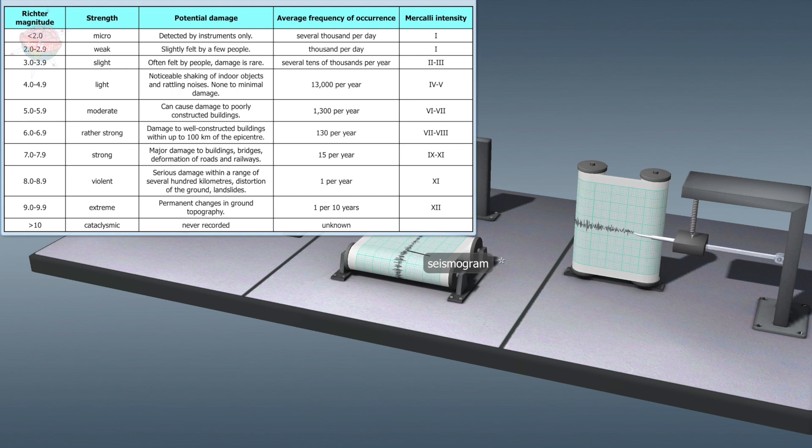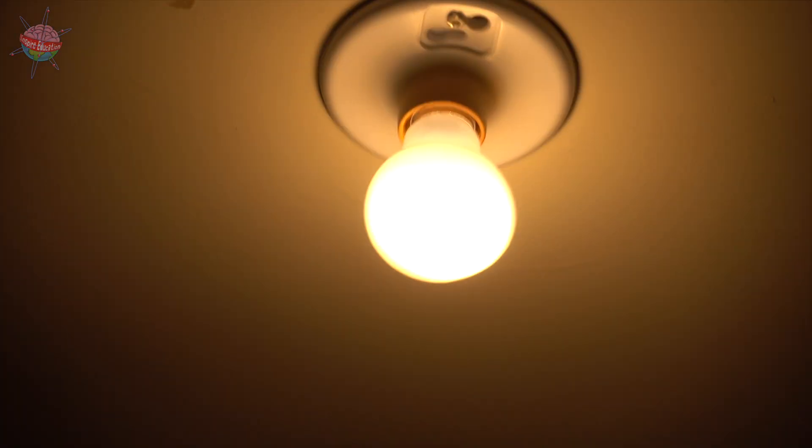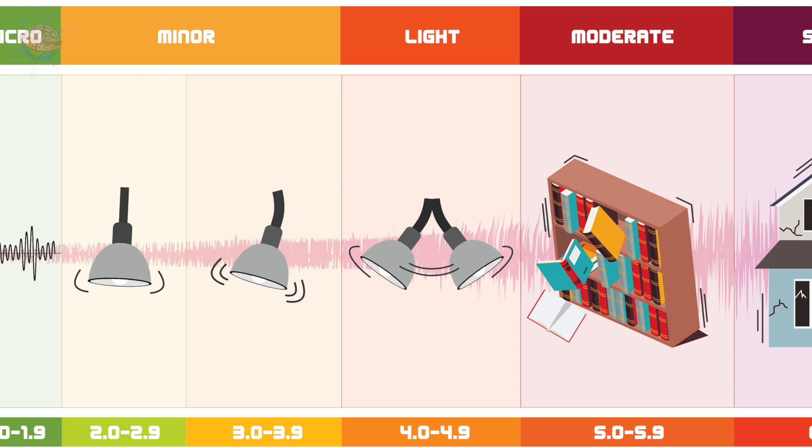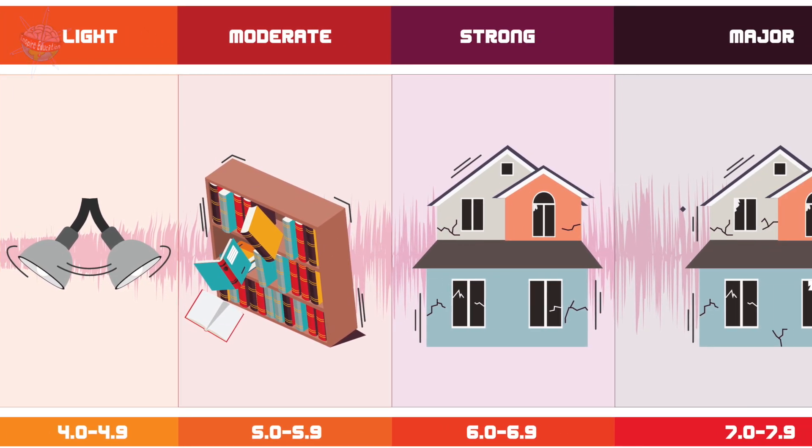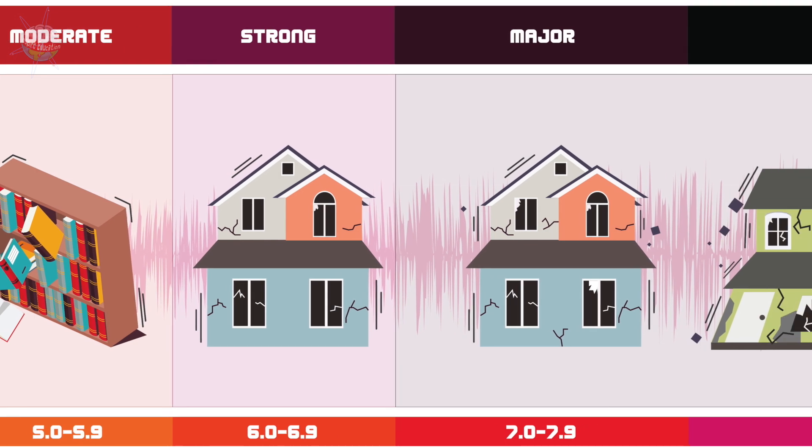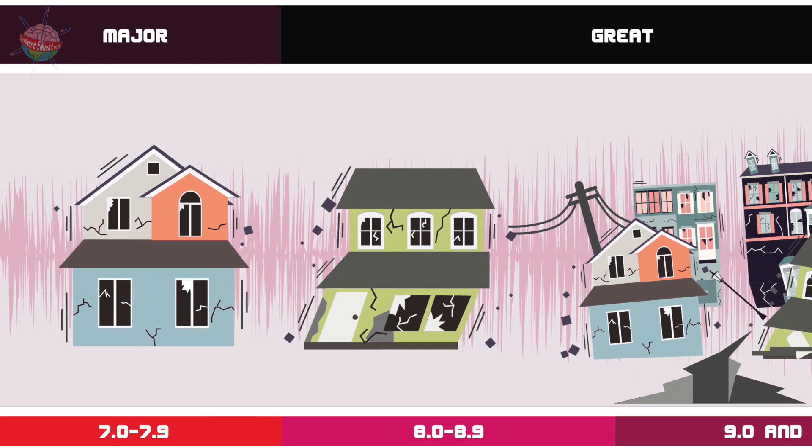The Richter scale is based on instrumental measurements. It indicates the amount of energy released during an earthquake, i.e., the magnitude, measured by seismometers. Each unit increase in the Richter scale represents a 32-fold increase in the energy released.